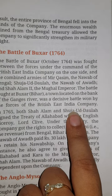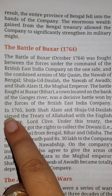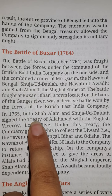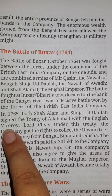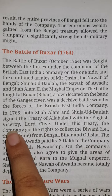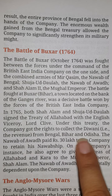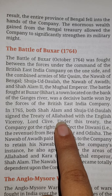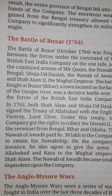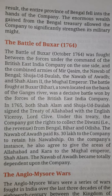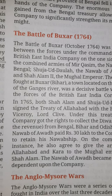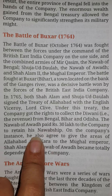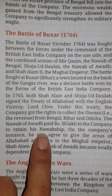The battle was fought for the Treaty of Allahabad. In 1765, both Shah Alam and Shuja-ud-Daula signed the Treaty of Allahabad with English viceroy Lord Clive. Under the treaty, the company got the rights to collect the Diwani, that is the revenue, from Bengal, Bihar and Odisha. The Nawab of Awadh paid Rs. 30 lakhs to the company to retain his Nawabship.